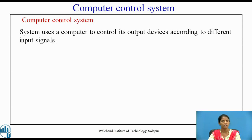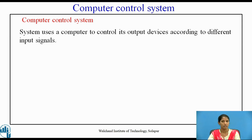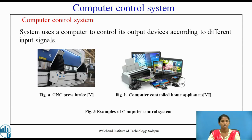A computer control system uses a computer to control its output devices according to input signals. It works similarly to electronic systems but operates on preset programs. Computer-based systems perform high-speed calculations in very little time and give output based on preset programs. An example is the CNC press brake. Figure B shows computer-controlled home applications such as laptops, printers, and mobile phones.